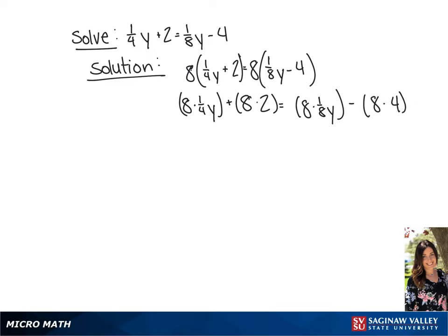Now once we multiply all this out, we get 2y plus 16 equals y minus 32.